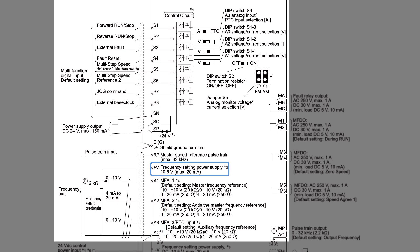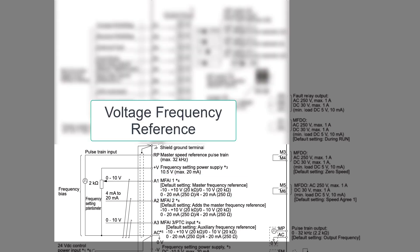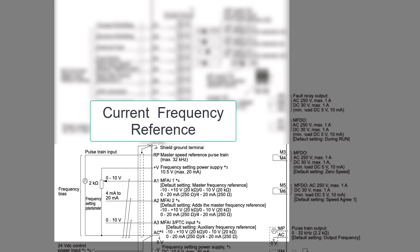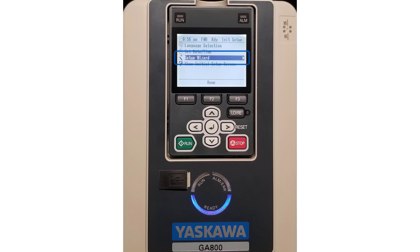Terminal +V is a 10-volt and 20-milliamp source for devices such as potentiometers and pressure transducers. AC is the analog input common. A1 is the first of three multifunction analog inputs and is the default setting for the master frequency reference. Connect a speed reference device that uses voltage to terminals AC and A1. If using a speed reference device that uses current, connect to AC and A2. In addition, if the product has the drive setup wizard, it will tell you what connections to make for several different configurations.